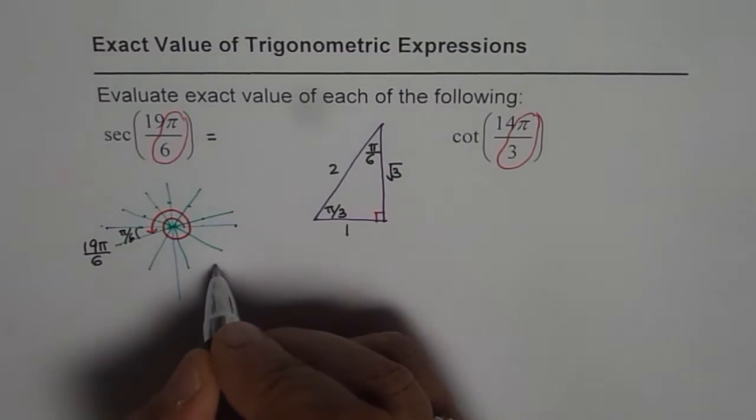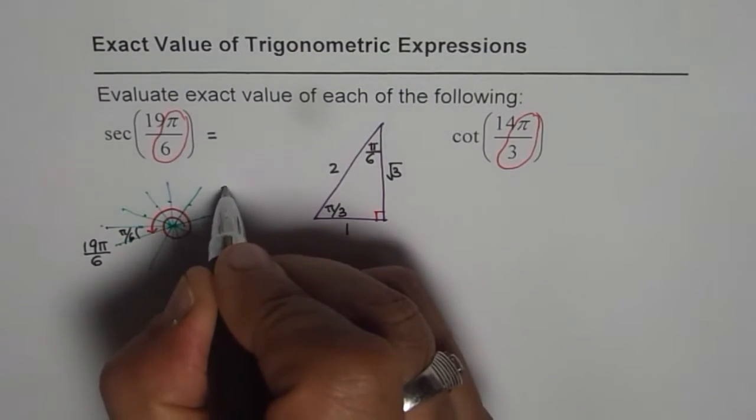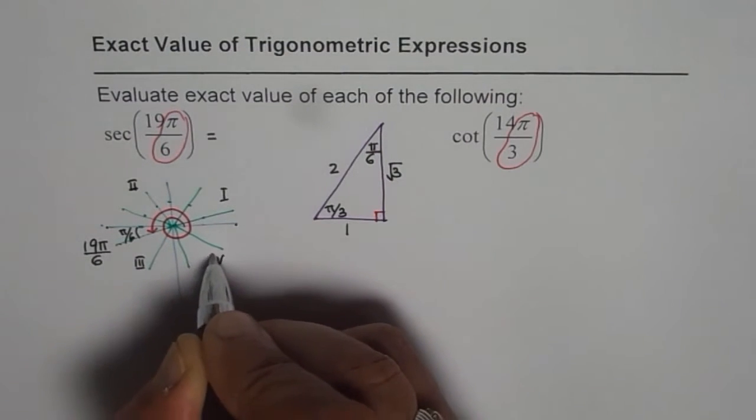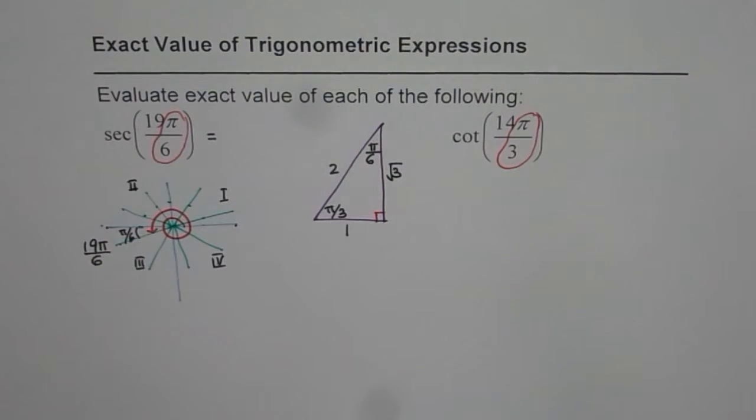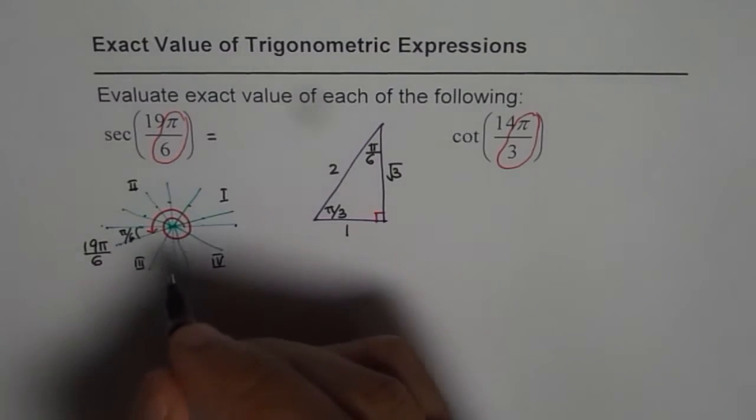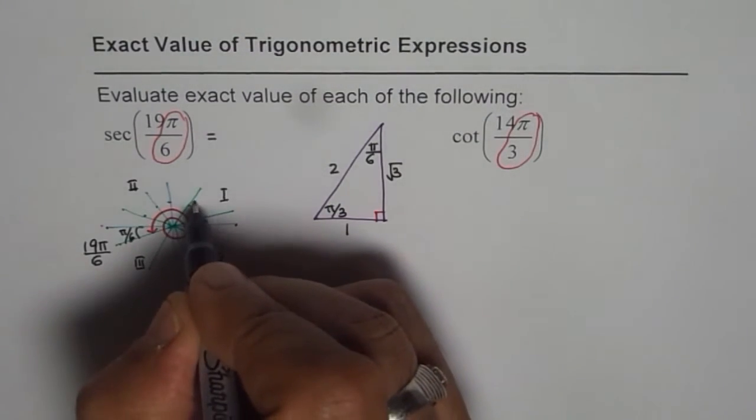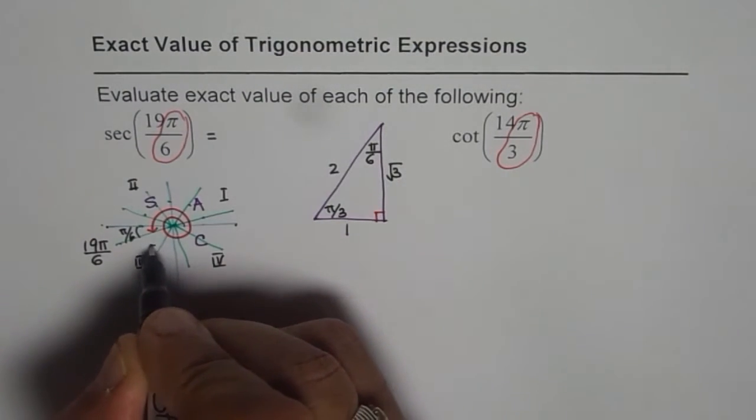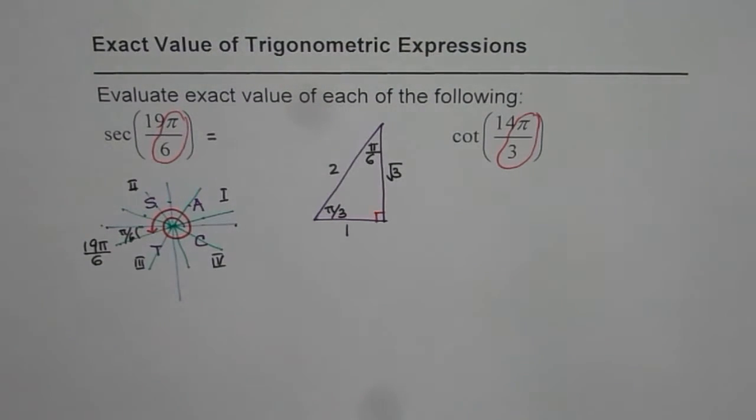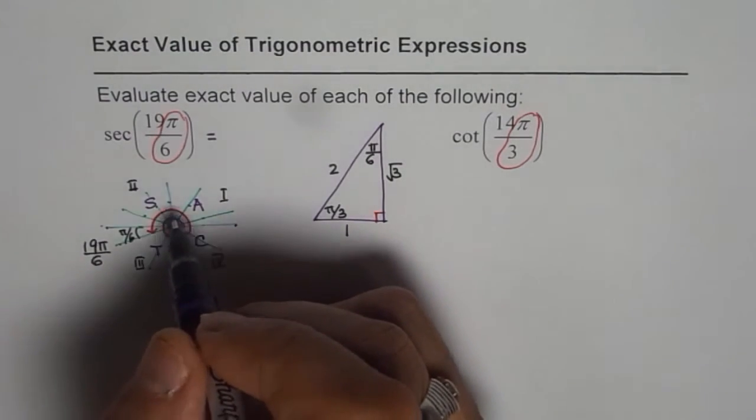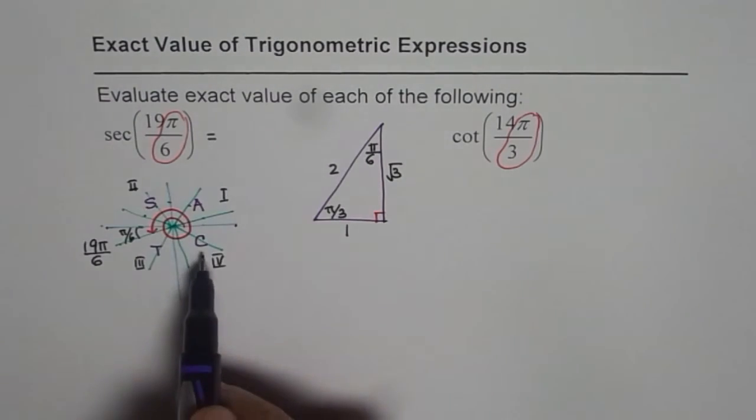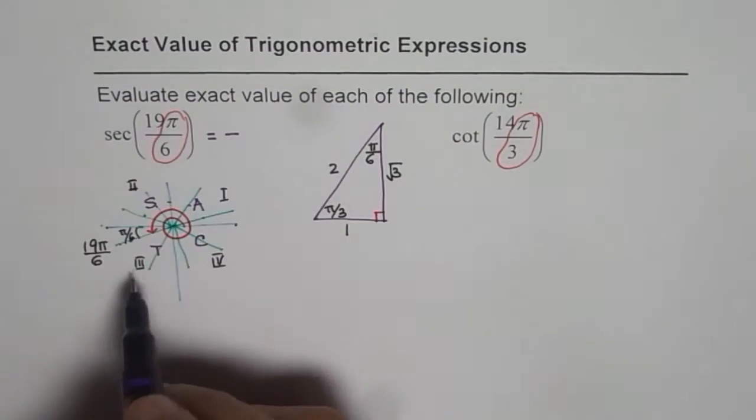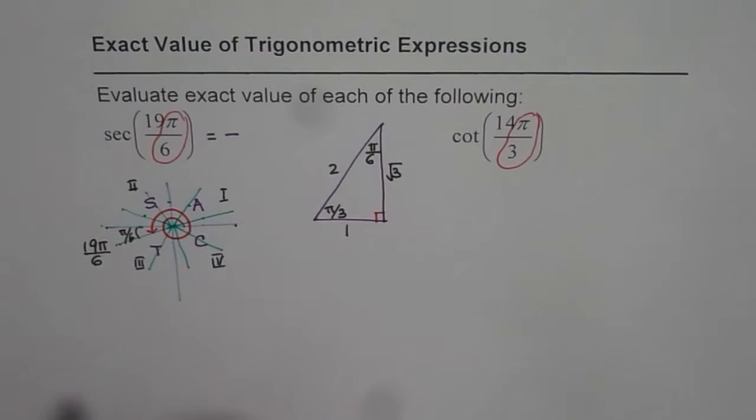We are in quadrant. This is 1, this is 2, this is quadrant 3, this is quadrant 4. And we know the CAST rule. CAST rule is cos is positive in quadrant 4. All are positive in quadrant 1, sine in quadrant 2, tan in quadrant 3. Secant is 1 over cos. Since it is related to cos, it is negative here. So we get a negative value since we are in quadrant 3.